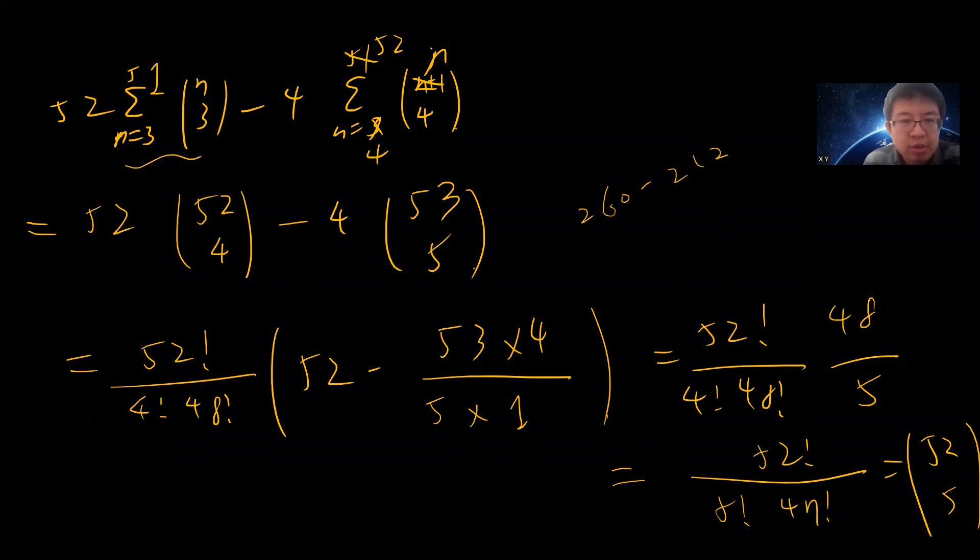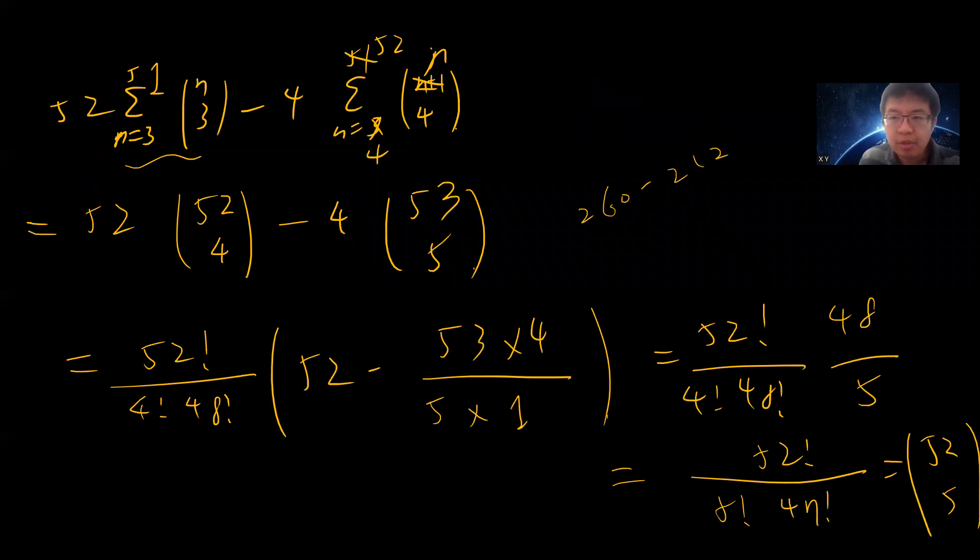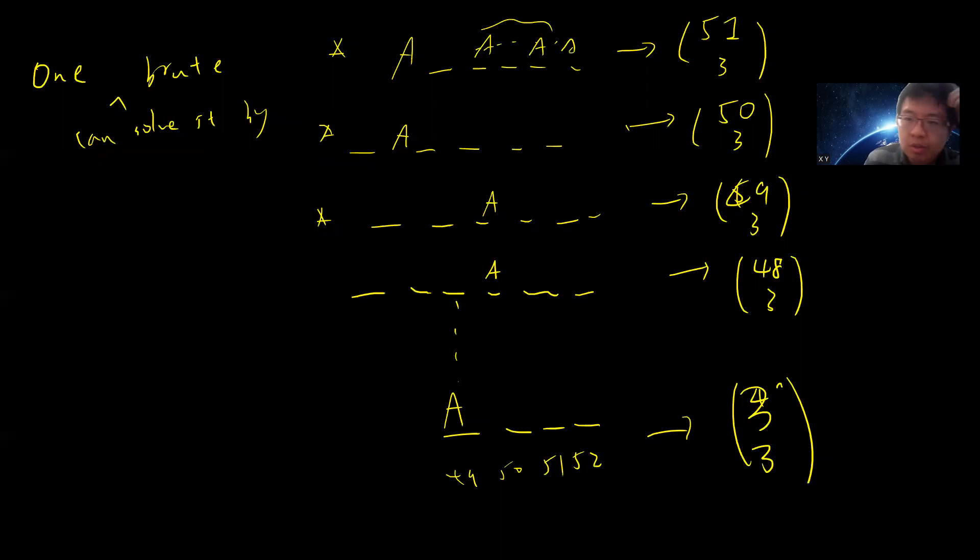Amazingly, your expected number will be just 52 choose 4 divided by 52 choose 5. This equals 52 factorial times 5 factorial times 47 factorial divided by 52 factorial times 4 factorial times 48 factorial, which gives you 48 divided by 5. This is the second proof where you just keep using this hockey stick identity. I hope you like doing this. I will see you guys in the next videos.